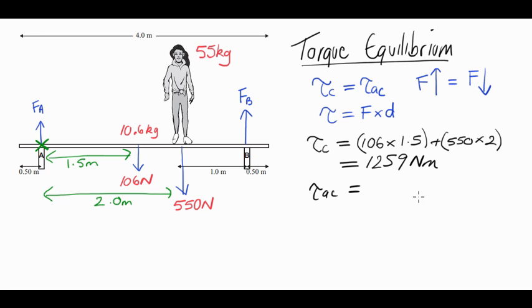Torques anticlockwise. We have got only one force which will act to make it want to turn in an anticlockwise direction about the pivot point and that's force B. Force A will not make it rotate in an anticlockwise direction because there's no distance between force A and the pivot. So the torques anticlockwise are going to be force B times a distance of 3 meters. Okay, so we know that it's at equilibrium, which means that torques clockwise has to equal torques anticlockwise. It means that 1259 torques clockwise has to equal 3 times FB.